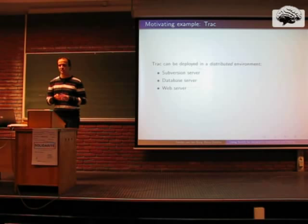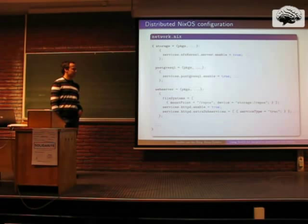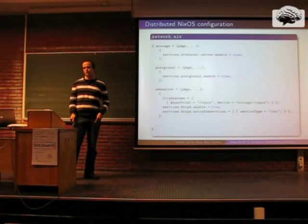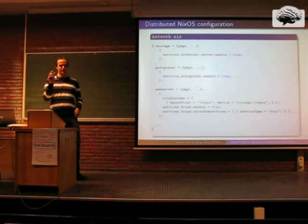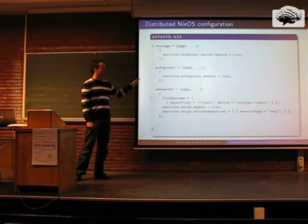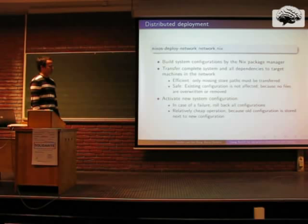With NixOS you can also capture a network of NixOS configurations. In this slide I show a configuration representing the TRAC example. The format is the same as an ordinary NixOS configuration except that I use various attributes each specifying a particular target in the network. So I have three separate NixOS configurations: one for a storage server storing Subversion repositories, one for a PostgreSQL database, and one for a web server providing access to end users. With the nixos-deploy-network command line instruction, you can deploy a network of machines from just one single specification.